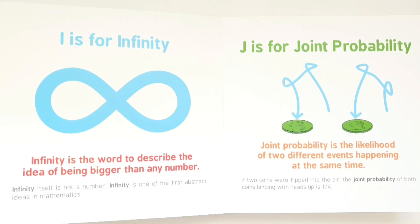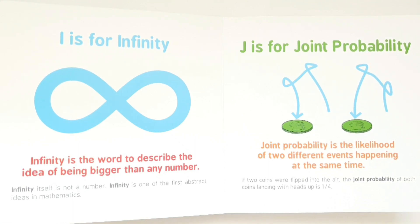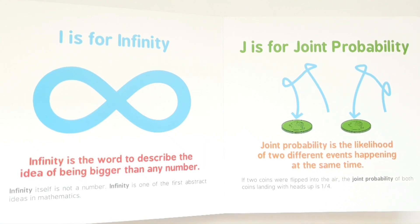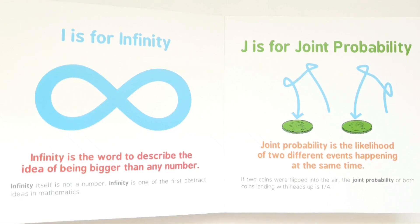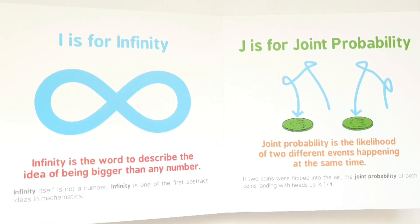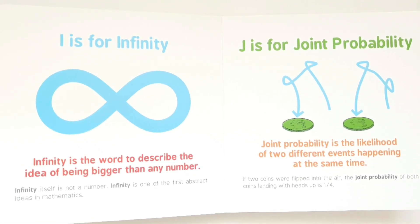J is for joint probability. Joint probability is the likelihood of two different events happening at the same time. If two coins were flipped into the air, the joint probability of both coins landing with heads up is a quarter.